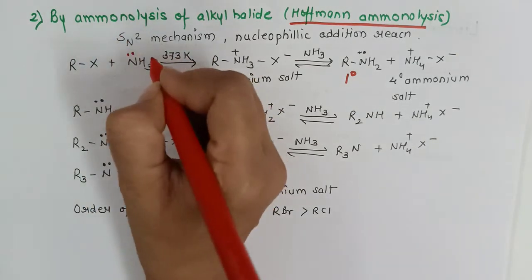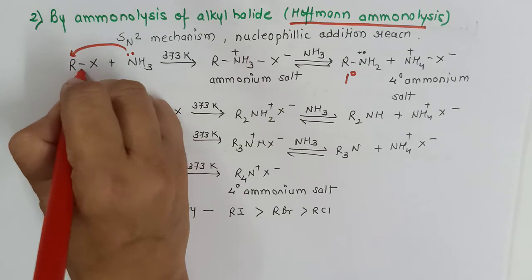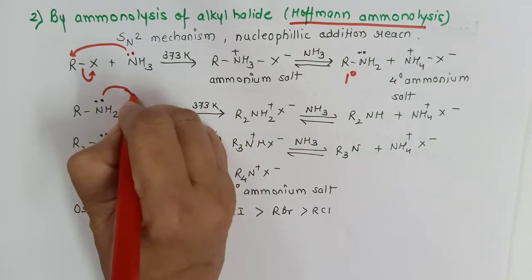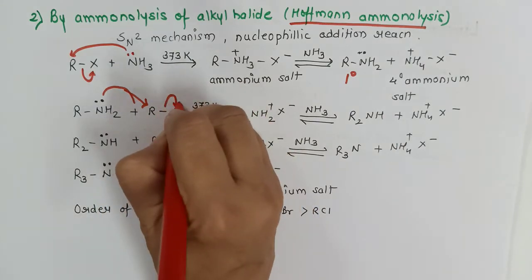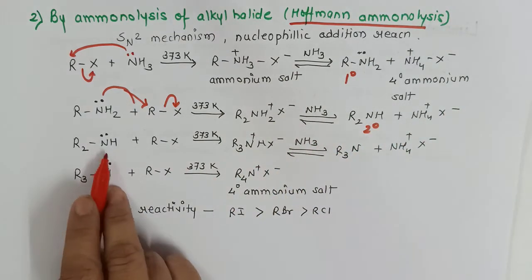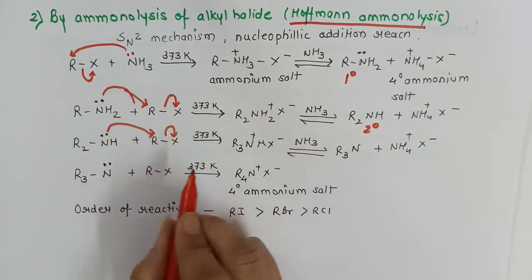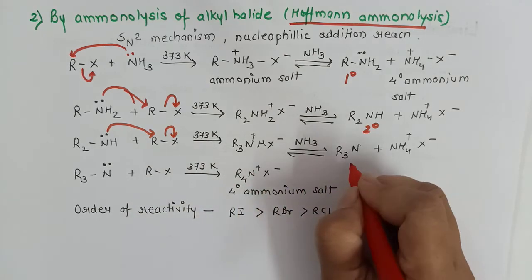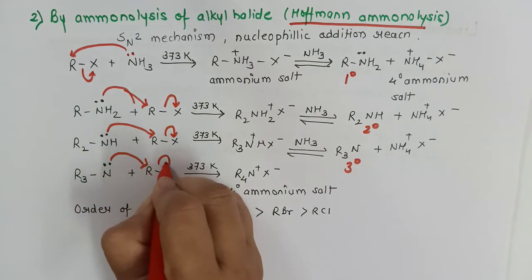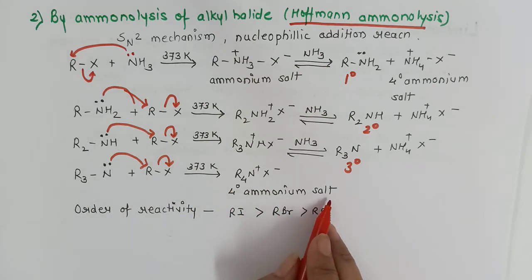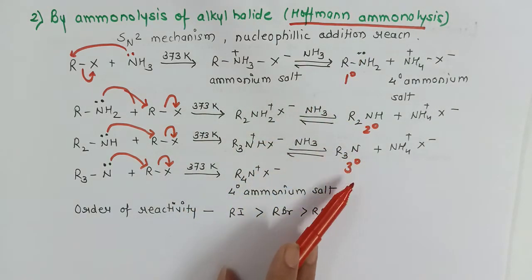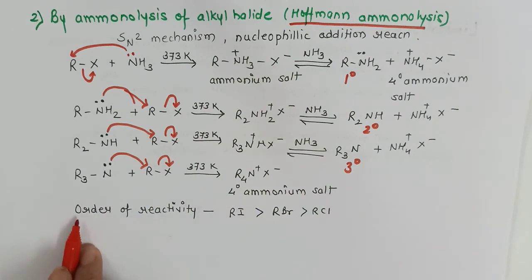In the mechanism: ammonia has a lone pair, which shifts to the alkyl group as the halide bond breaks, giving ammonium salt. The reaction proceeds with cleavage of the R-X bond to give a 2° amine, then continues at 373 K giving a 3° alkyl amine, and further cleavage gives quaternary ammonium salt. So the reaction gives a mixture of 1°, 2°, 3° amines and quaternary ammonium salt.